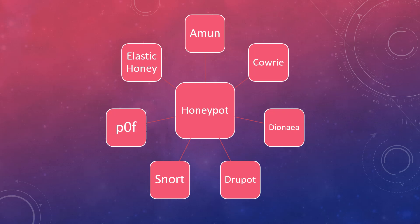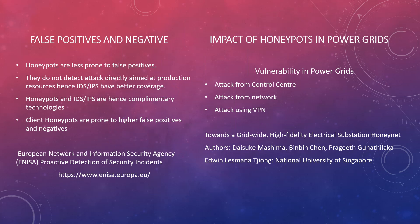These are the honeypots we've used. They fall into low, medium, and high interaction categories. Low interaction honeypots are easily detected, don't emulate the whole system, and have limited logs. Medium and high interaction honeypots are more interactive — they emulate a real system, are harder to detect, and produce different types of logs. In higher interaction honeypots, we can even replay the sessions of exactly what the attacker has done.